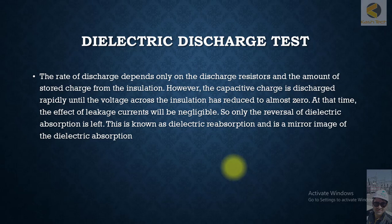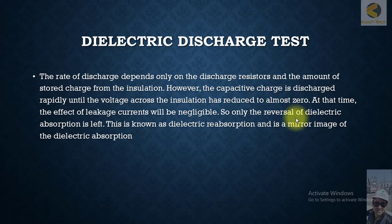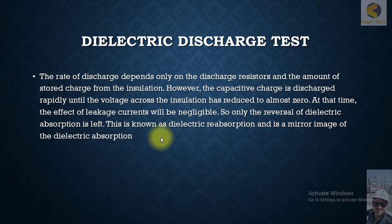Let's continue the topic of dielectric discharge stress. The rate of discharge depends only on the discharge resistors and the amount of stored charge from insulation. The capacitive charge is discharged rapidly until the voltage across the insulation has reduced to almost zero. At that time, the effect of leakage current will be negligible, so only the reversal of dielectric absorption is left — this is known as dielectric reabsorption, and is a mirror image of dielectric absorption.